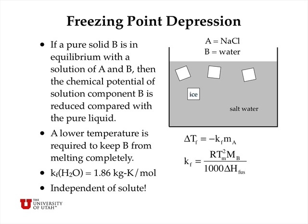Now we turn to colligative properties. The first colligative property is the freezing point depression. If pure solid B — in this case, ice — is in equilibrium with a solution of A and B, that is to say, salt water, then the chemical potential of the solution component B, the water component in solution, is reduced compared with the pure liquid. That means a lower temperature is required to keep the solid ice from melting completely. The freezing point depression constant for water is 1.86 kilogram·kelvins per mole, and the delta T in the freezing point is equal to the freezing point depression constant times the molality of the solute in moles per kilogram solvent.